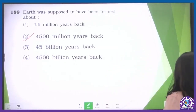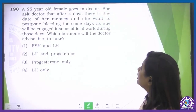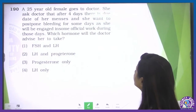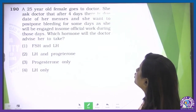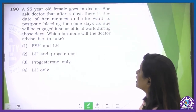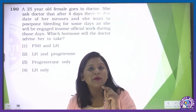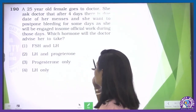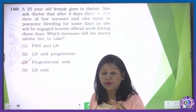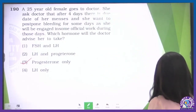Question number 190: a 25-year-old female asks her doctor to postpone her menses, which are due in 4 days, as she will be engaged in official work. Which hormone will the doctor advise her to take? We know that menstruation occurs due to a fall in progesterone. If progesterone is kept high in the blood, menstruation will not occur. So the doctor will prescribe progesterone. The correct option is the third one.